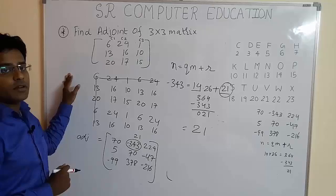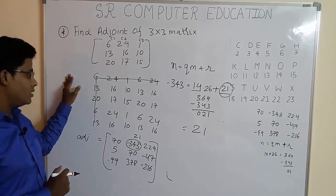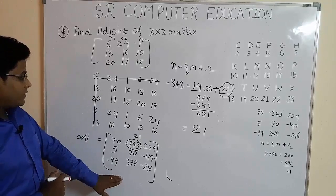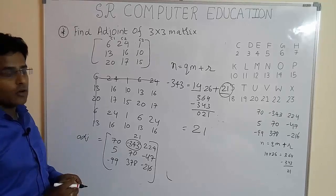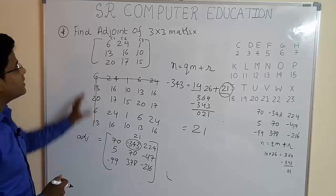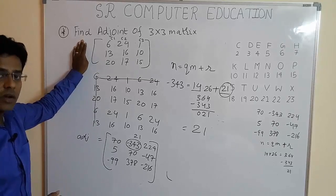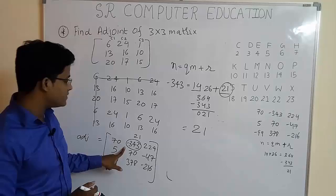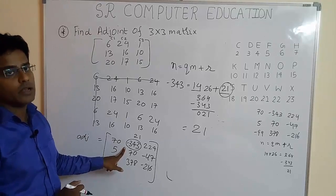Now, in the decryption of Hill cipher, which I had solved the example, this portion will be very helpful for you. So, this is how we find the adjoint of the matrices when the given matrices is 3 cross 3. And this is how we convert this negative value into positive value.